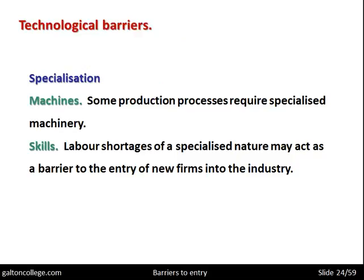There are also technological barriers, for example specialisation and machinery. Some production processes require specialised machinery, and it may be difficult for new entrants to acquire that technology — perhaps it's too expensive, or the suppliers of that equipment have a special relationship with existing companies and are reluctant to supply a new competitor, not wanting to alienate their existing customers.